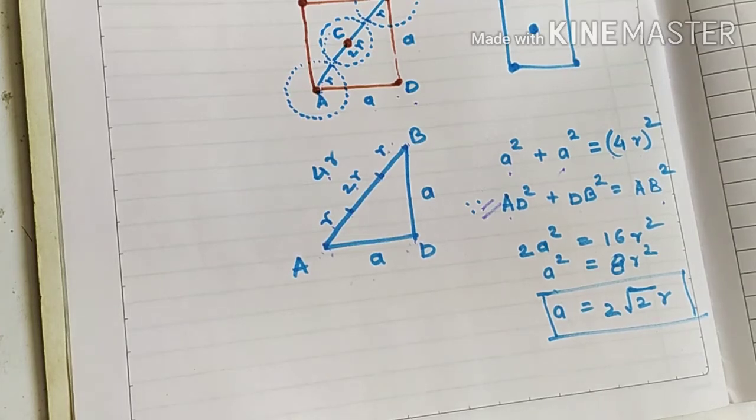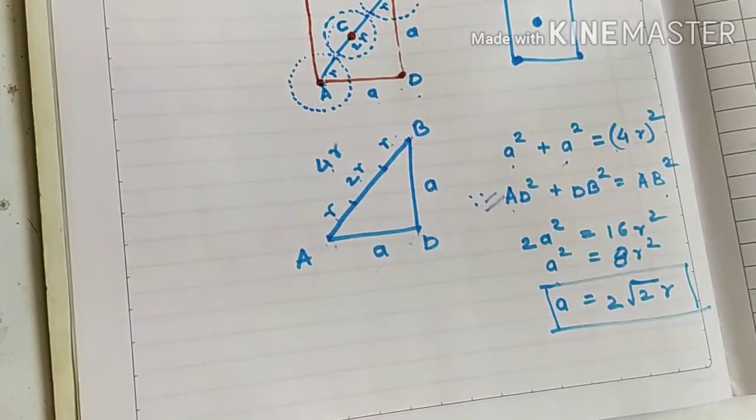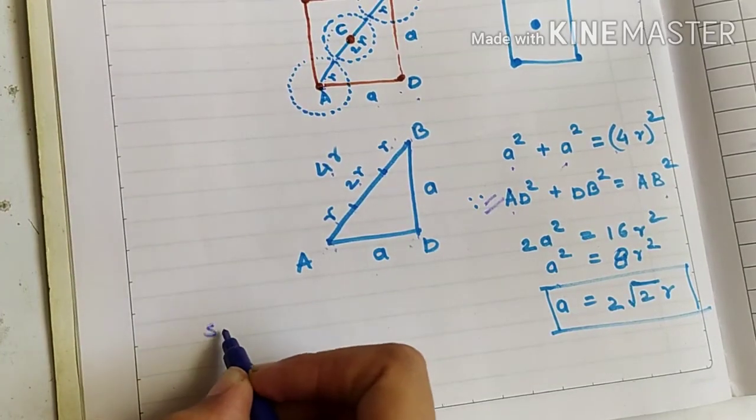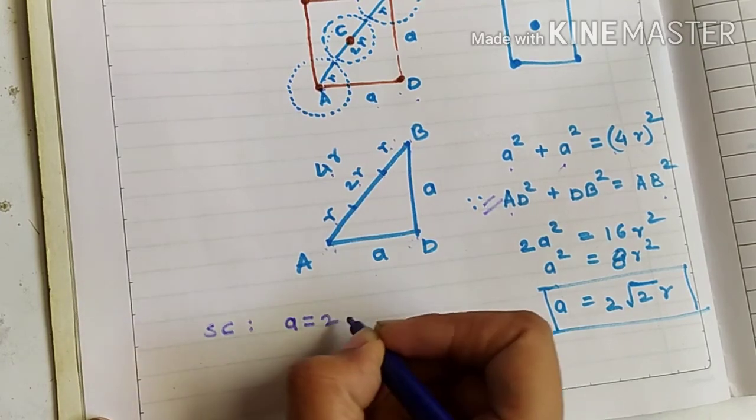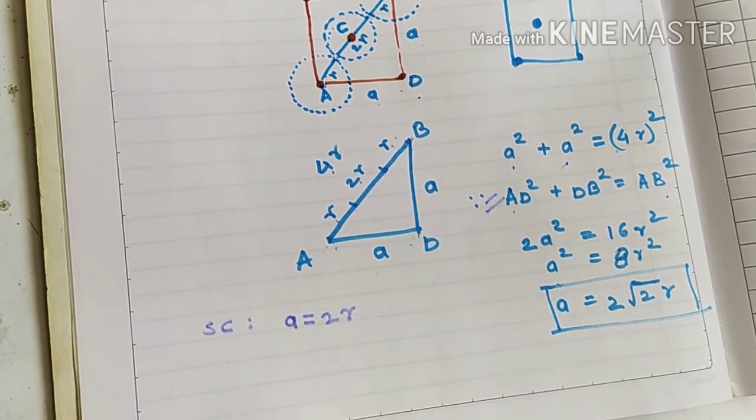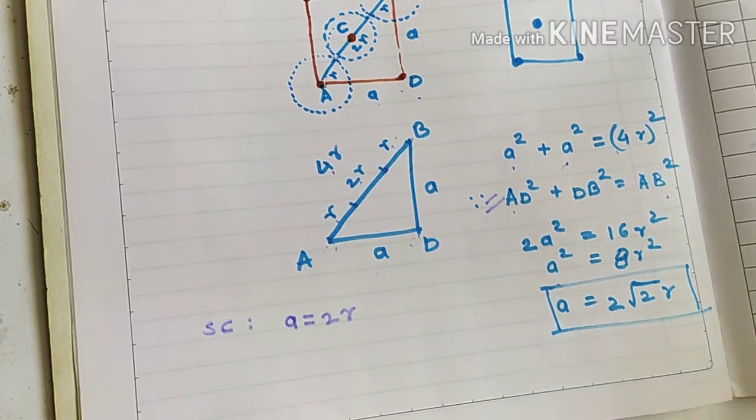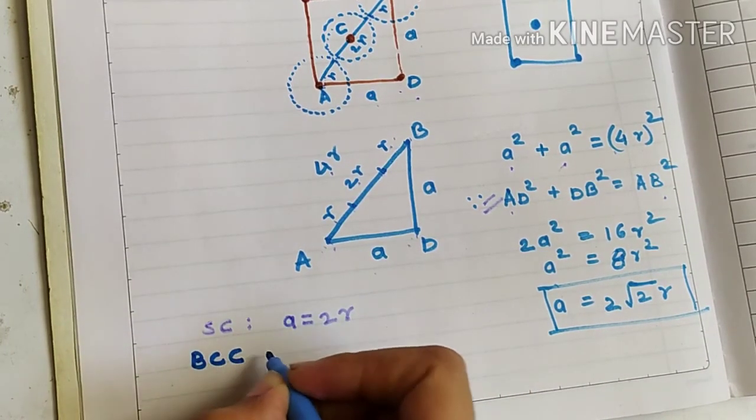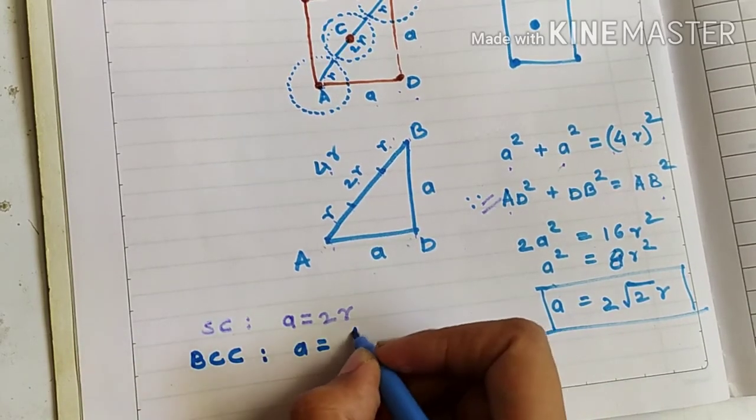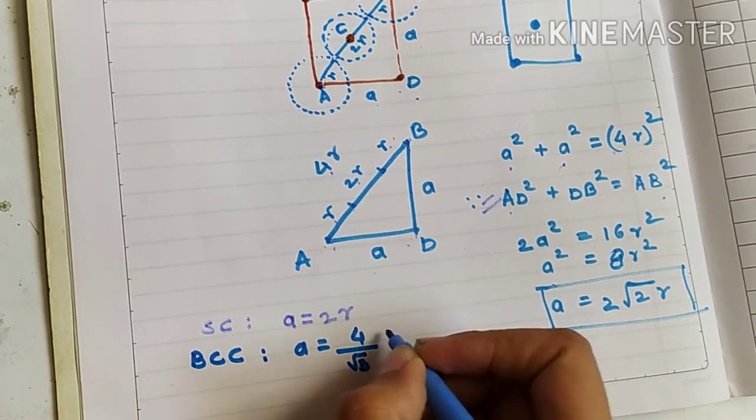Similarly, we can find out relation between a and r for different kinds of crystal structures. In a similar fashion, we can find out the relation between a and r for simple cubic. For simple cubic, it comes out to be a is equal to 2 times r. Similarly, for body centered cubic, it comes out to be a equal to 4 upon root 3 into r.